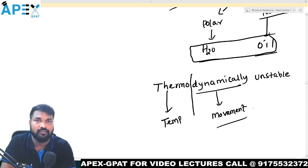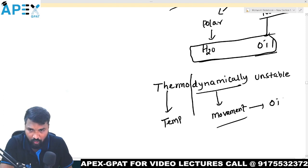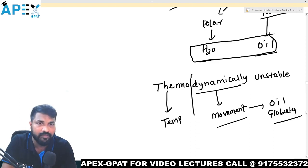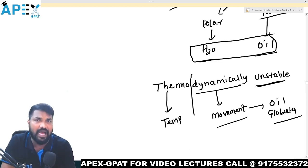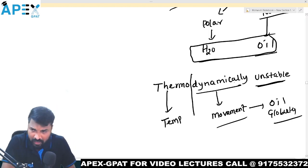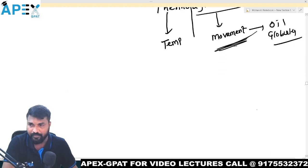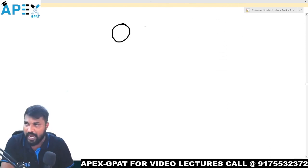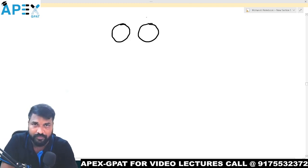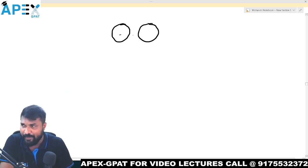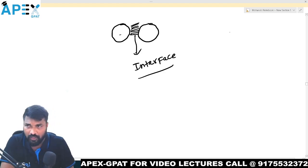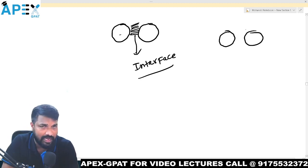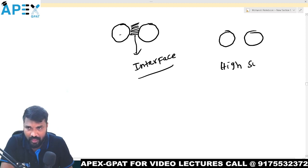What is the movement here? The movement is the oil globules. Whatever oil globules we have, these oil globules will move together. One oil globule to another oil globule — the space in between we call the interface. These oil globules have high surface free energy.